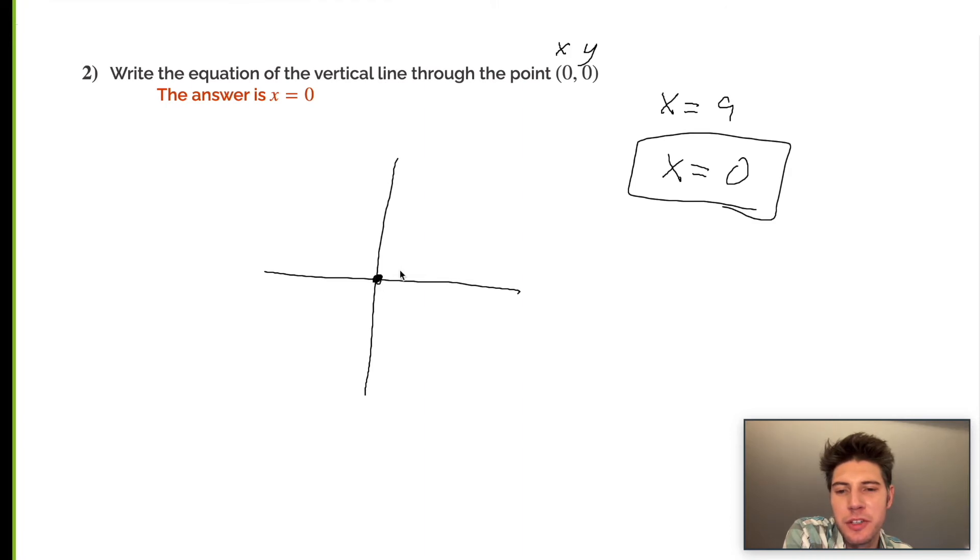Same thing, I'll show you the visualization of what's happening. We have the point (0,0), and we want the vertical line going through that, which happens to be the y-axis. The equation of this line is x equals zero. All the points on this line would have zero for an x-value.